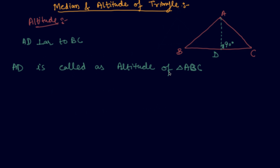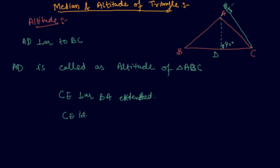So AD is called the altitude of triangle ABC. It depends upon the shape of the triangle whether the altitude will lie in the interior of the triangle or on the exterior. For example, if I draw another altitude from point C, it lies outside. Let's say this point is E, and CE is perpendicular to side AB extended. So CE is also an altitude but lying outwards.